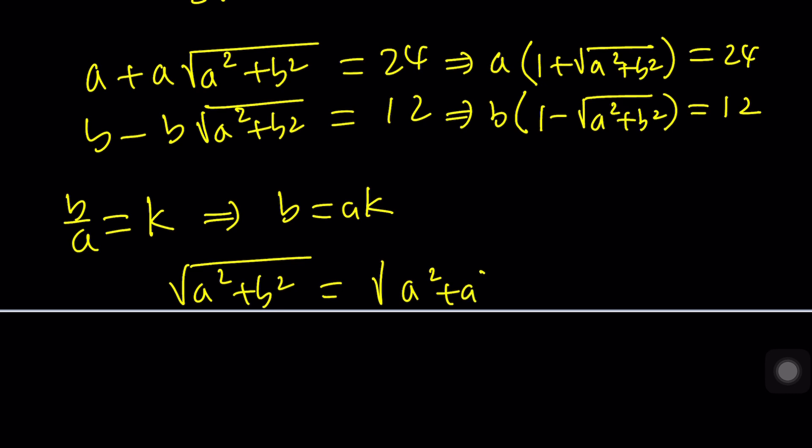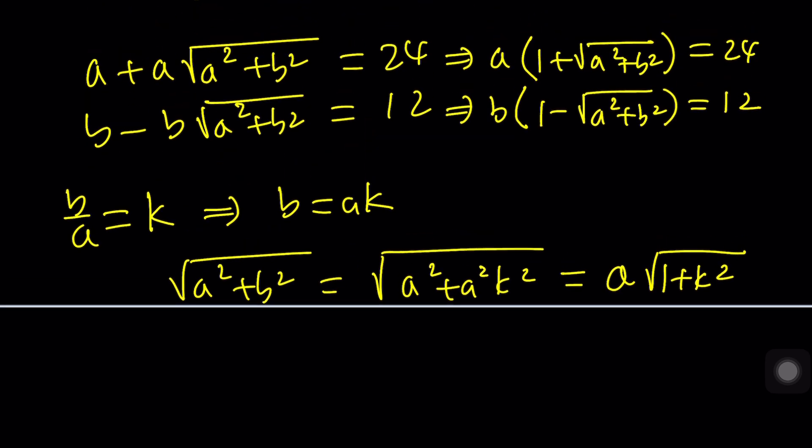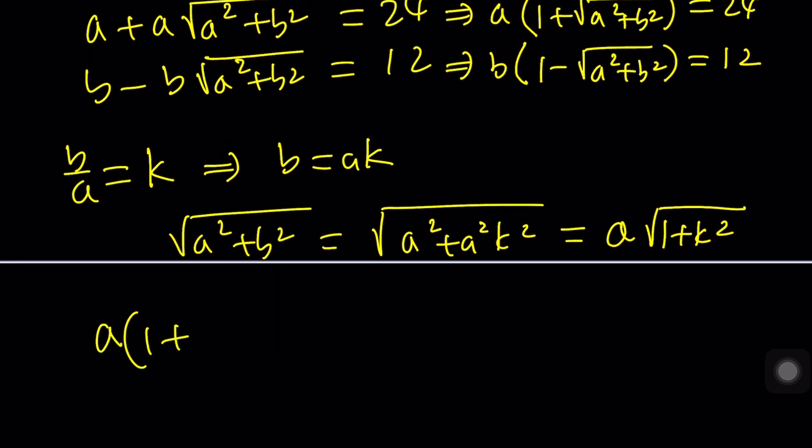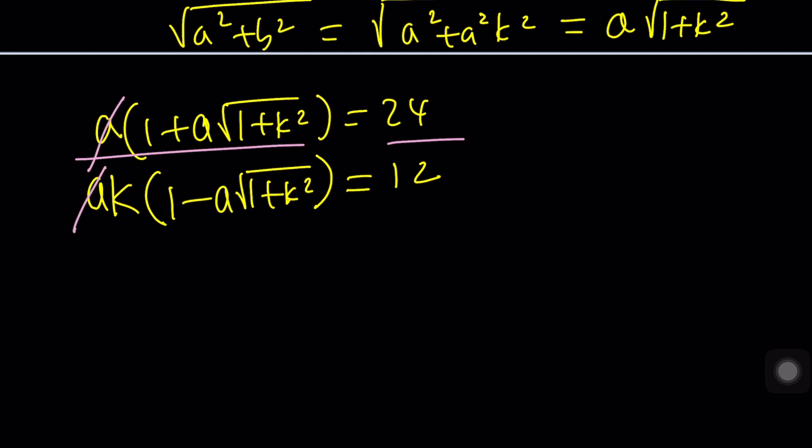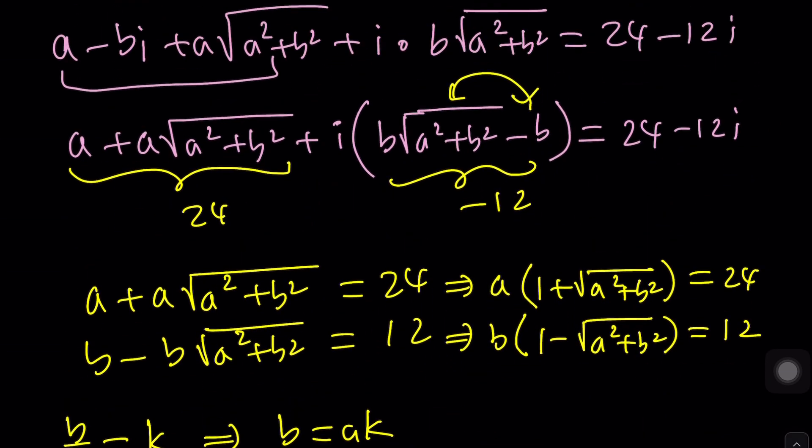A squared plus A squared K squared. Yes, A comes out. If A is negative, it's a different story. I'm just going to assume A is positive in this case first. And we're going to have the square root of 1 plus K squared. A times 1 plus A times this equals 24. And in the second equation, B is going to be AK multiplied by 1 minus A times the square root of 1 plus K squared. Divide these equations. A cancels out. And then these two don't cancel out. So we're going to end up with two variables. I don't think this is going to help. So I'm going to go back and try a different approach.